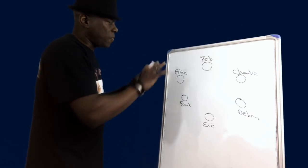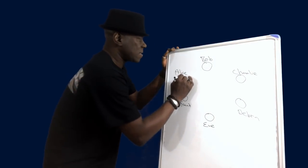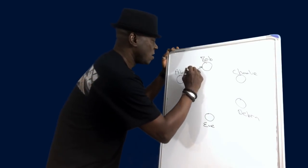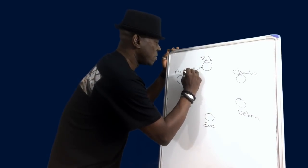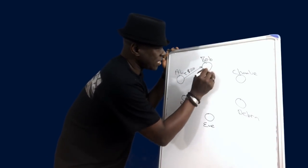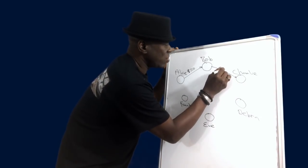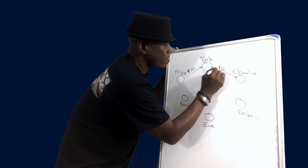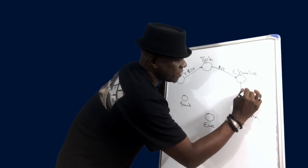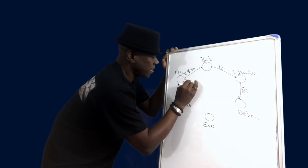But for this example, in this scenario, we'll start with Alice has sent Bob first transaction $20. And then let's have Bob sending Charlie $10, and Charlie sent Deborah $5. And this will help us populate our ledger.